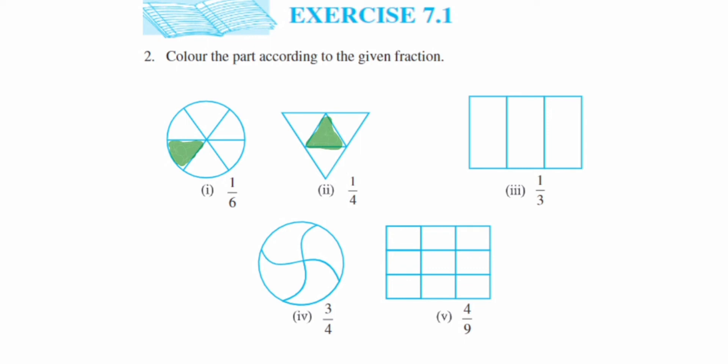The next one we have 1 upon 3. So 3 parts are given, again only one part. One is the numerator, only one part we have to color here. So you can choose any one part and you can start coloring.